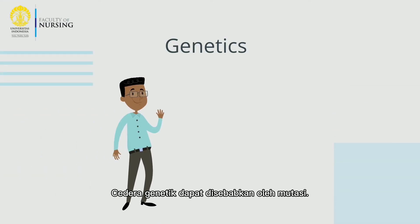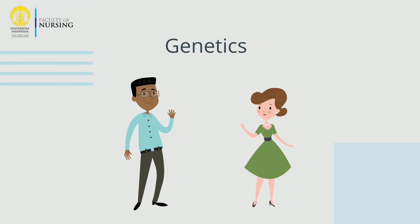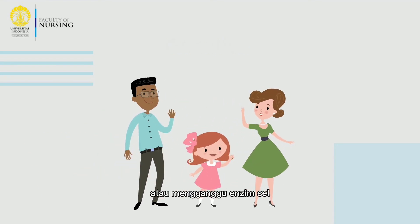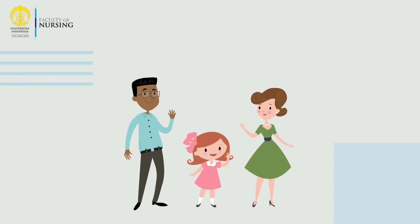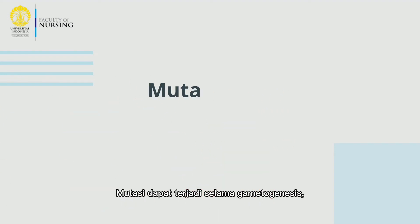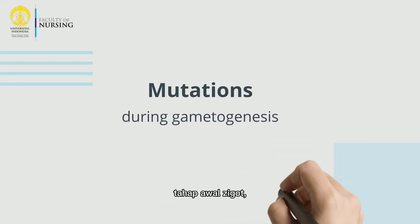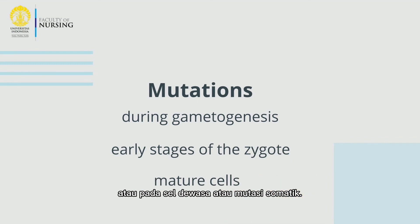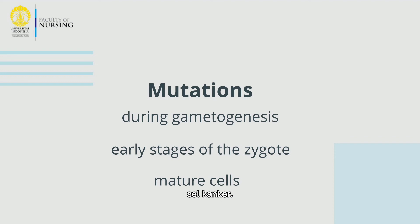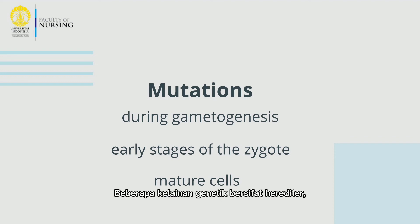Now, genetics. Genetic injuries can be caused by mutations. Mutations can damage a cell's enzymes or interfere with cell enzymes so that cells cannot survive. Mutations can occur during gametogenesis, early stages of the zygote, or in mature cells — somatic mutations. Cell mutations can be the basis of the transformation of cancer cells. Some genetic disorders are hereditary, such as sickle cell anemia.